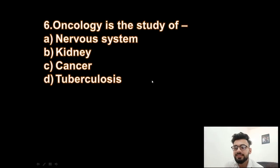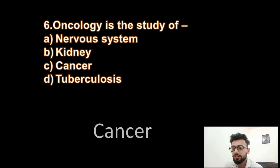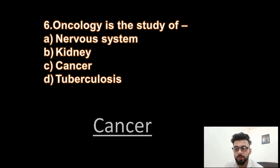Question 6: Oncology is the study of the nervous system, kidney, cancer, or tuberculosis? The answer is cancer — the study of cancer is known as oncology.